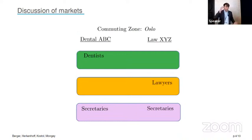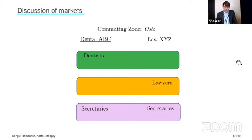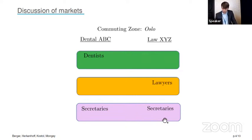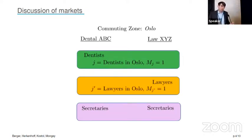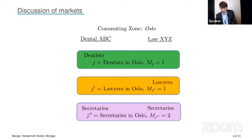Let me give you an example of what these markets look like. Consider the commuting zone Oslo and two companies — dental firm ABC and law company XYZ. The dental firm hires dentists and secretaries; the law firm hires lawyers and secretaries. Through our framework, we split these into three separate markets: dentists in Oslo with one firm and potential monopsony power; lawyers in Oslo similarly with one firm; and secretaries in Oslo with two firms competing head to head.